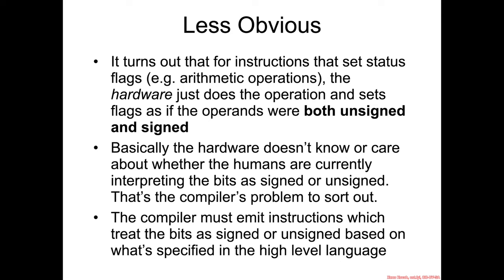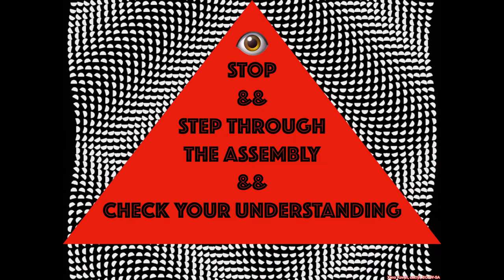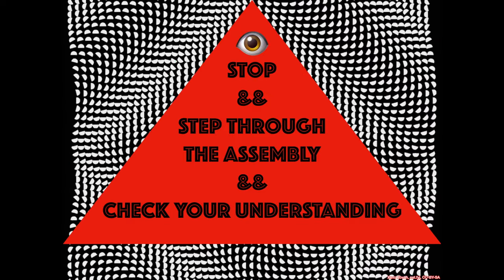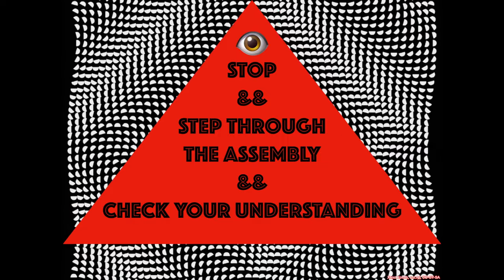It ultimately allows the compiler to sort it out. When parsing the tokens of the high-level language syntax, the compiler figures out whether the human means the variable is signed, and so it should emit the signed comparison instructions. The key takeaway from if example 2 is simply that the compiler emits different instructions based on whether the type is signed or unsigned.